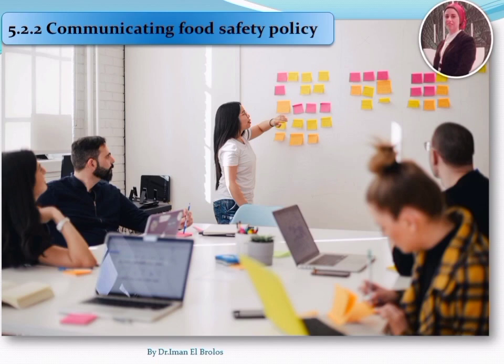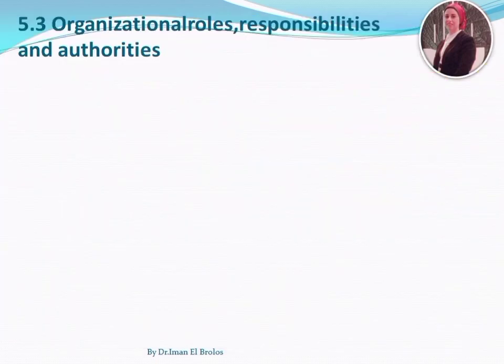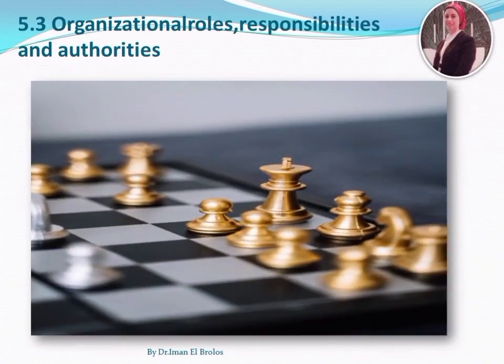The food safety policy should be available as documented information. The third section covers organizational roles, responsibilities, and authorities. In this section the standard requires the top management to define responsibilities, authorities, and roles throughout the organization.